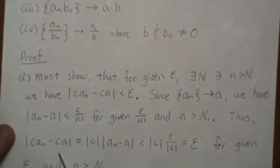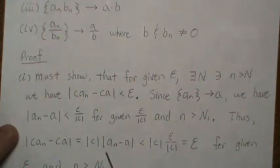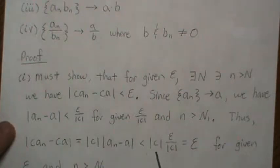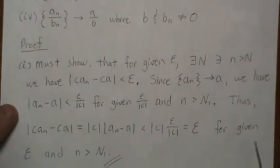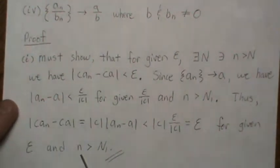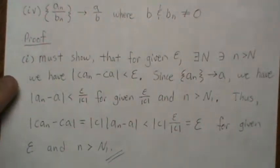Thus, |cAn − cA| equals |c| · |An − A| if we factor out the c, and then it's less than — we keep the c here — and since it's a convergent sequence we made |An − A| less than epsilon over |c|, but |c| times epsilon over |c| equals epsilon. And this is for a given epsilon and all n greater than N1. So we've just proved part one.